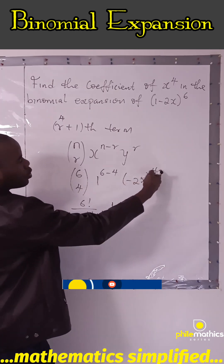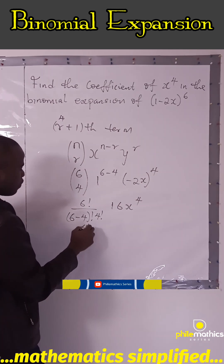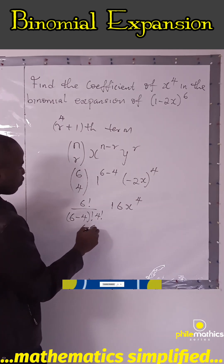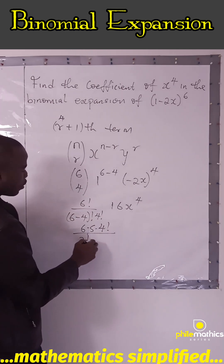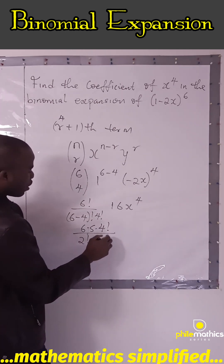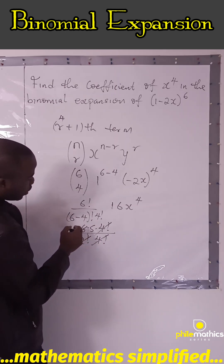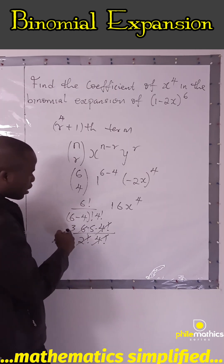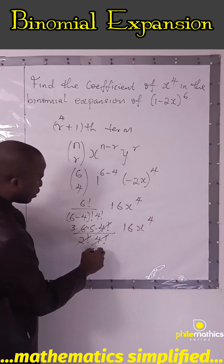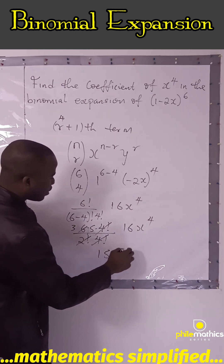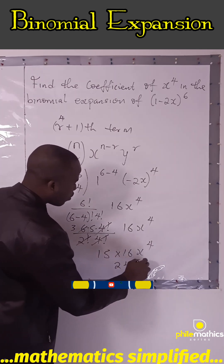The minus sign is gone because the power 4 is even. So we expand: 6 factorial is 6 times 5 times 4 factorial, over 2 factorial times 4 factorial. The 4 factorials cancel, and 2 factorial is 2 times 1, so 2 goes into 6 giving 3. That leaves 3 times 5 = 15. This times 16 gives 15 times 16 x to the power 4.